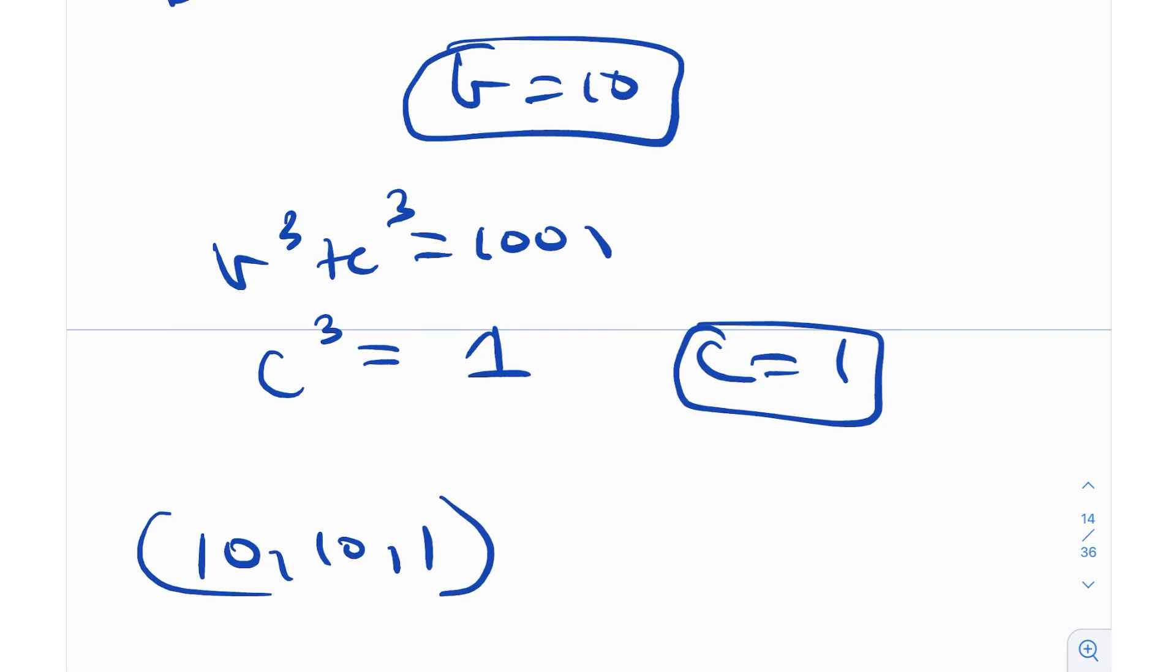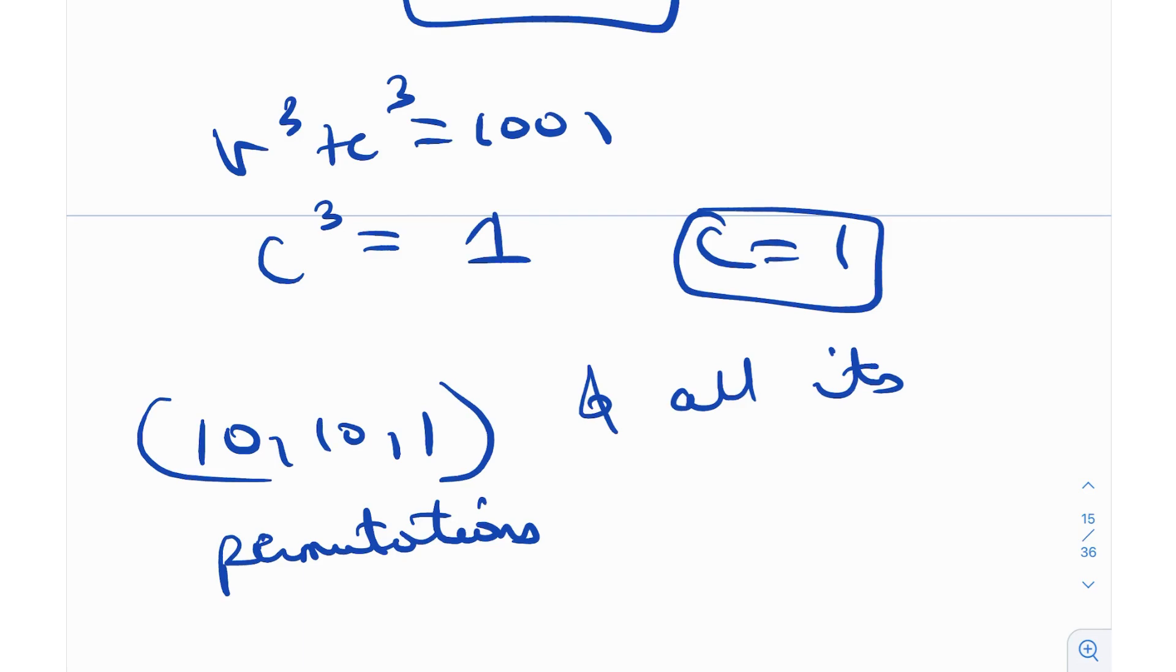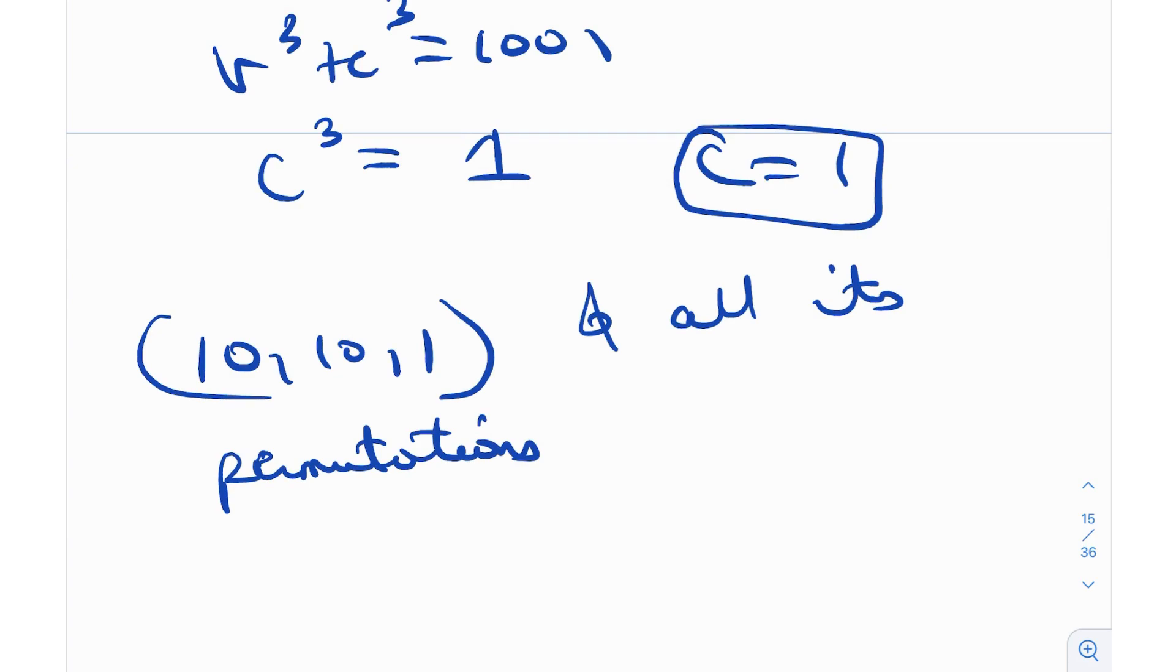But is that it? No. We write 10, 10, 1 and all its permutations, because it's symmetrical. If A, B, C is a solution, all permutations of A, B, C will also be solutions. The reason why we got only one solution is we used the without loss of generality that A ≥ B ≥ C. But if you consider some other order, you'll get a different set of solutions. So basically, 10, 10, 1 and all its permutations - for example, 1, 10, 10, or 10, 1, 10 - all of these things will be included in the solution set.